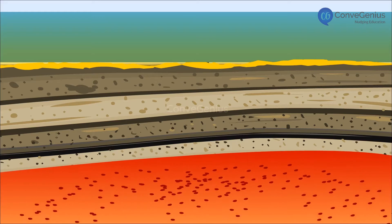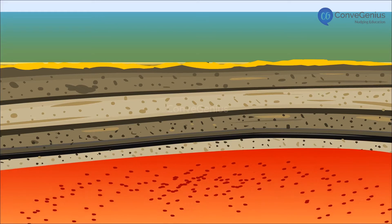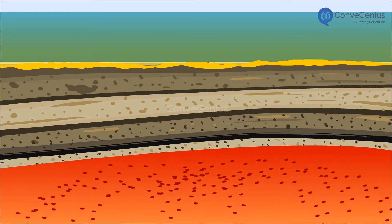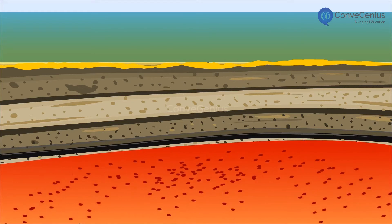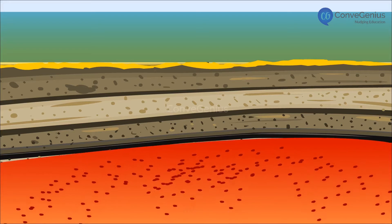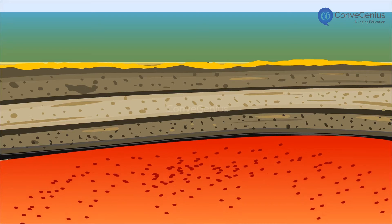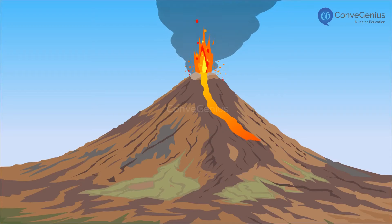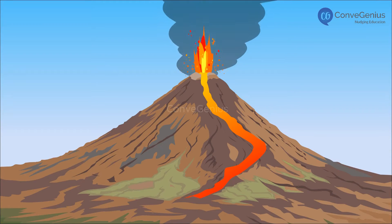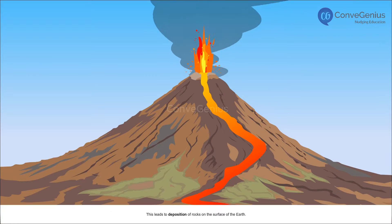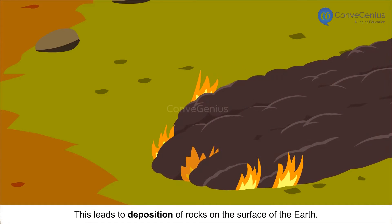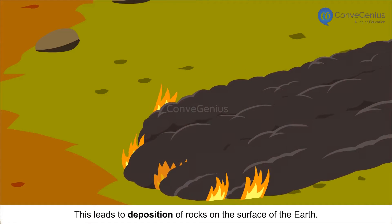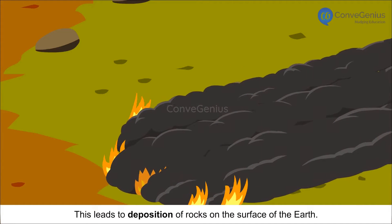Volcanoes erupt when there is movement within the Earth's mantle due to extreme heat and pressure, and molten magma pours out through a vent on the Earth's crust. This leads to deposition of rocks on the surface of the Earth.